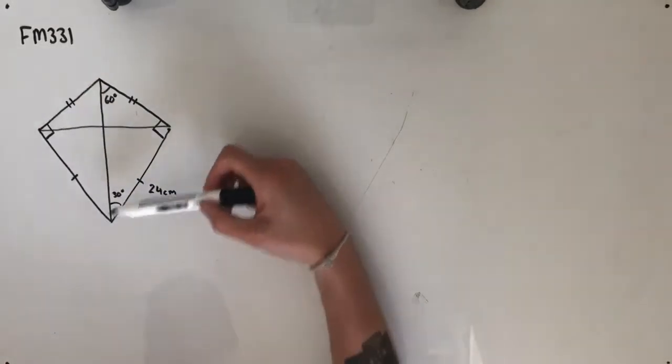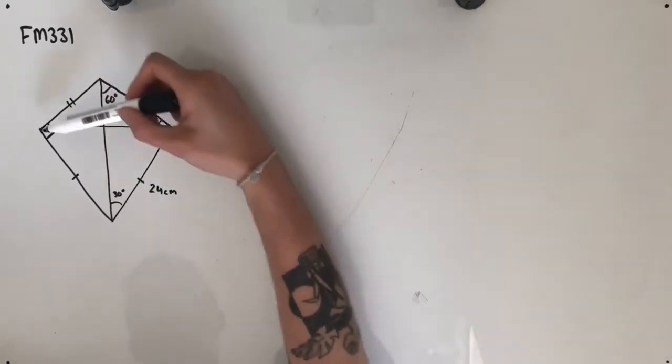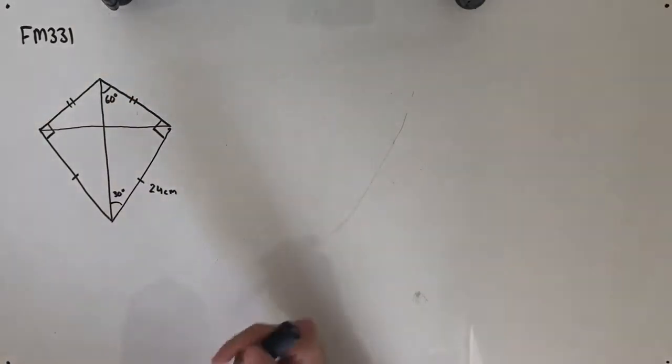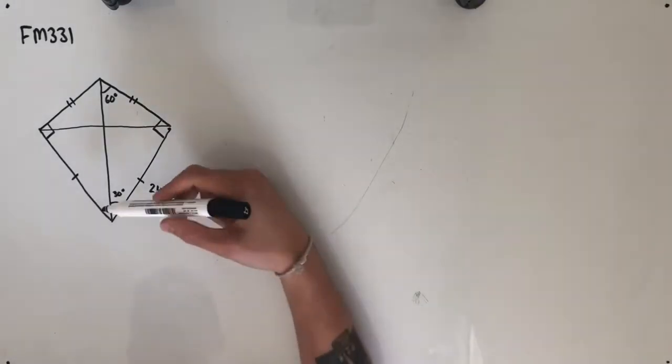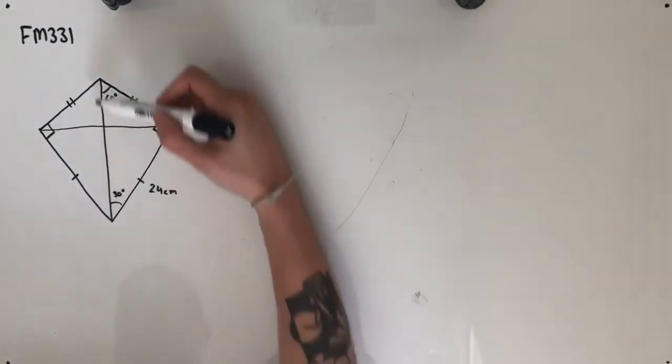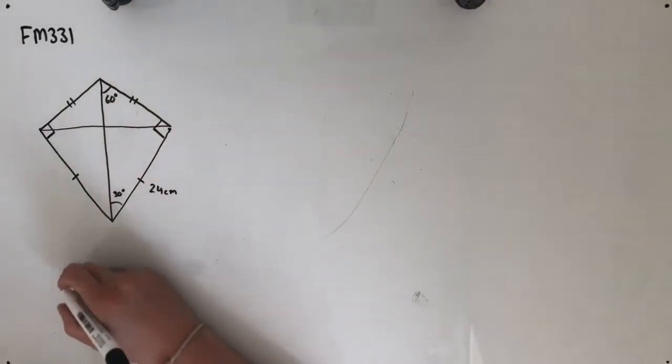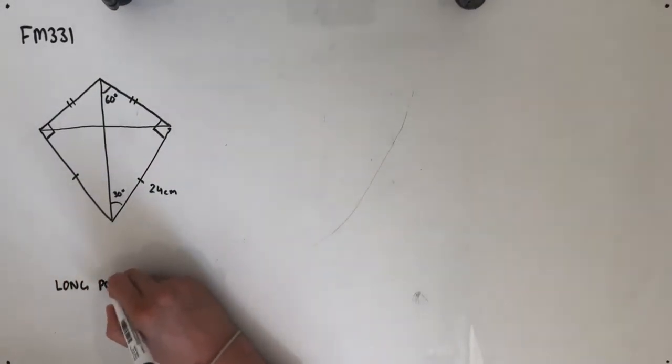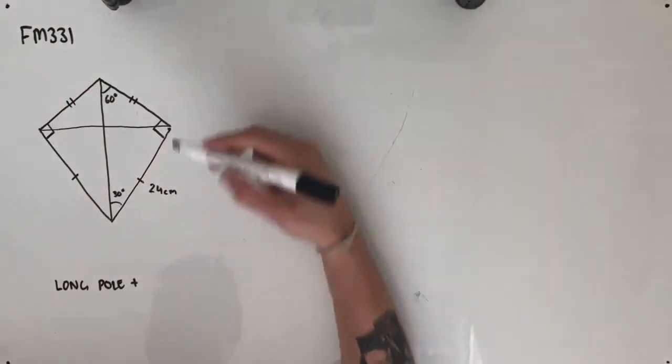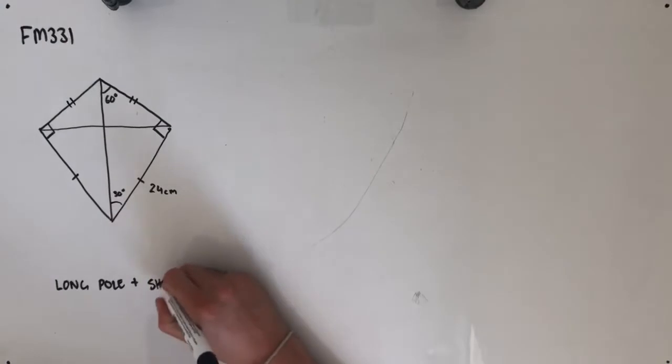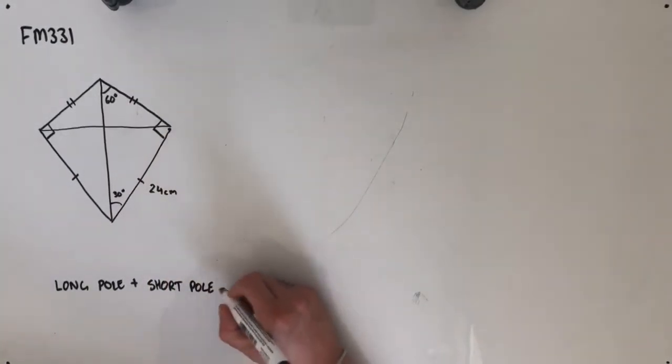So we need to find the length of the metal poles that would make this cross through our kite here. If we call this length of metal the long pole and add that to this length of metal here, which we'll call the short pole, then we would have our total.